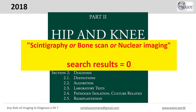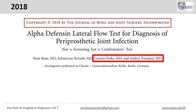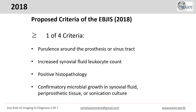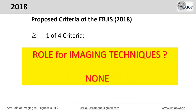In Europe, we have this publication from Andrei Trampuz, a famous infectious disease specialist working in Berlin with Karsten Perka, who is the chair of the orthopedic department. They published the proposed criteria of the European Bone and Joint Infection Society. As you can see, these criteria — which were not clinically validated and not formally released by the EBJIS — have no mention of imaging techniques whatsoever.